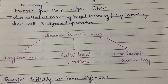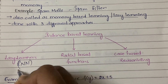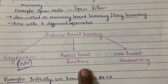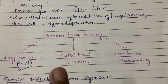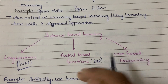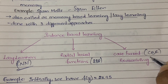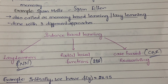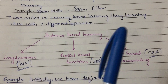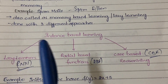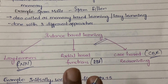You can do instance-based learning with three different approaches. First are lazy learners — the best example is KNN (K-Nearest Neighbors), which we'll discuss in detail in the next video. Second are radial basis functions (RBF), used for weighted methods, covered in a separate video. Third is case-based reasoning (CBR), where you classify based on different cases rather than continuous values — also covered separately.